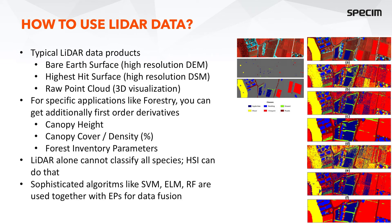So how do you use LiDAR data? A high-resolution bare earth surface or DEM is one of the most typical products. You can also have roads, structures, and other surface features included. For vegetation applications, you get canopy closure and structure, and tree and stand heights. The typical LiDAR data products are: the bare earth surface, which is the high-resolution DEM; the highest hit surface, which is the high-resolution DSM; and the raw point cloud, which is essentially a 3D visualization.